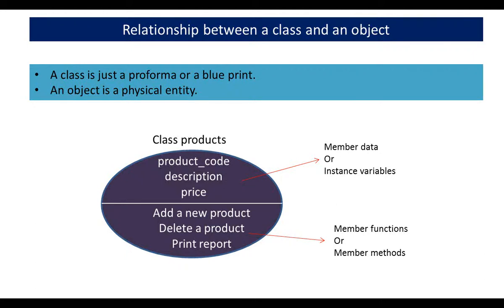Now let me explain the relationship between a class and an object. As I have told you earlier, a class is just a proforma or a blueprint. That means a class will imbibe all the data and all the functions which are going to be applied upon a number of objects belonging to that class.